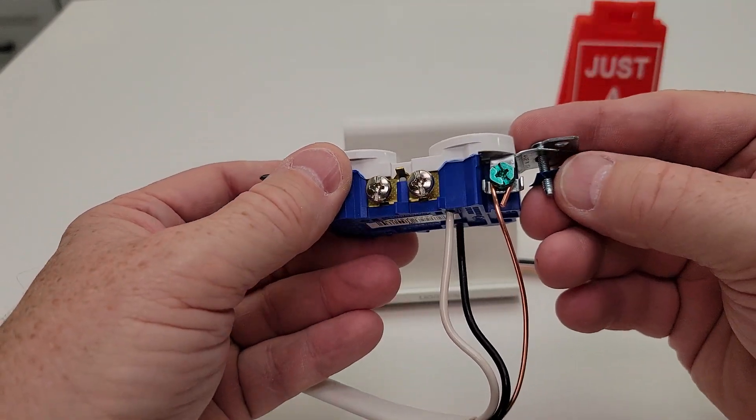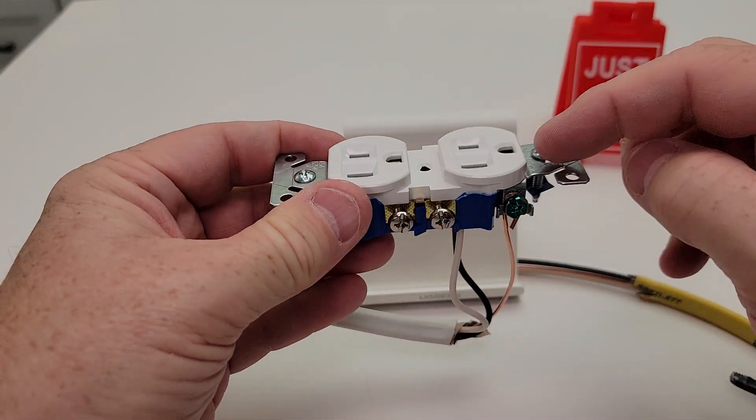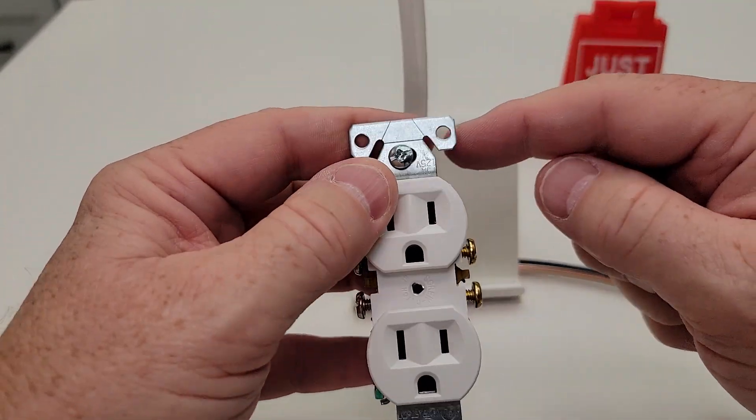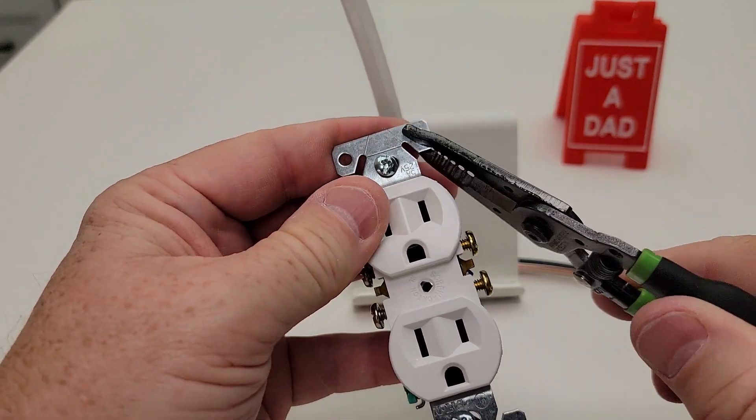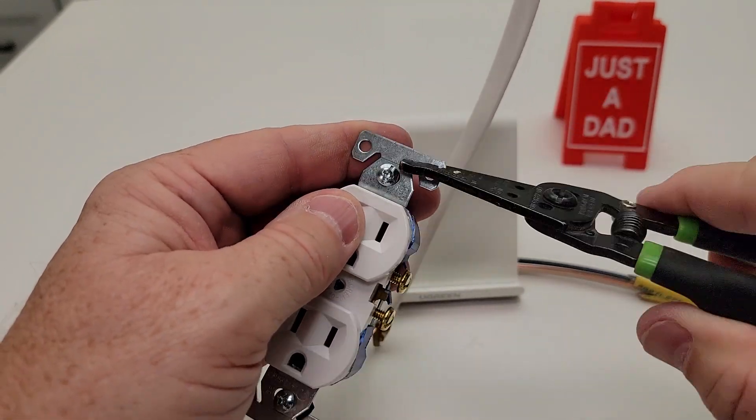I like that the screws have these little retainers on them because it comes with the screws installed. Some receptacle boxes, they've got little lines here. You can break these ears off and you can break the ear off right there also.